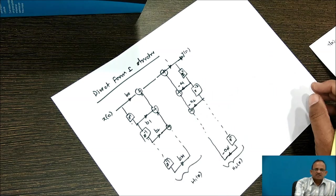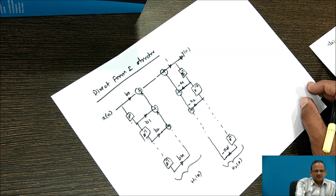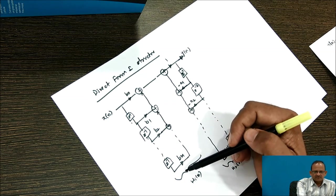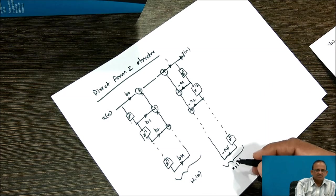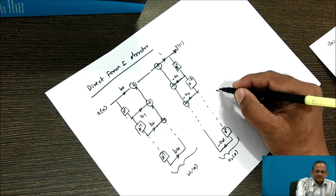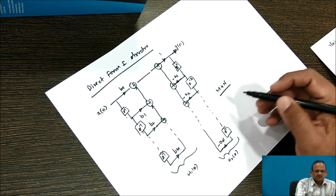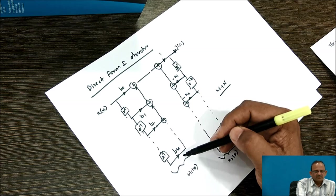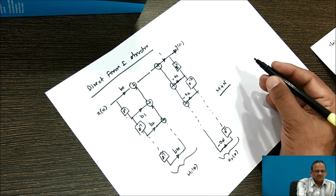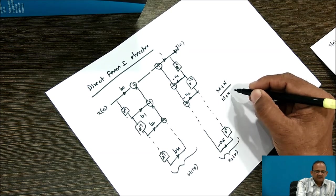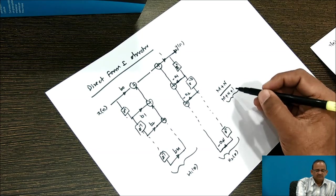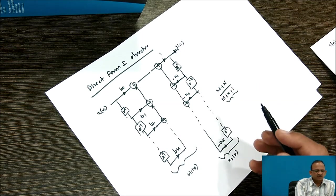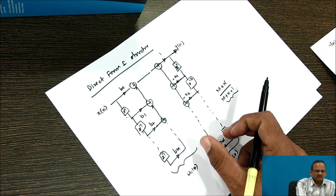This realization is known as the Direct Form 1 realization. Considering the complexity of this structure: on the H1(z) side we have M storage elements, and on the H2(z) side we have N storage elements, so the total memory requirement is M+N. The total number of multipliers required is M+N+1 for all coefficients. Since this is represented by a cascade connection of the two systems, it is possible to interchange the order of the two systems.